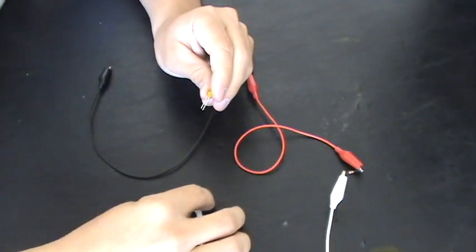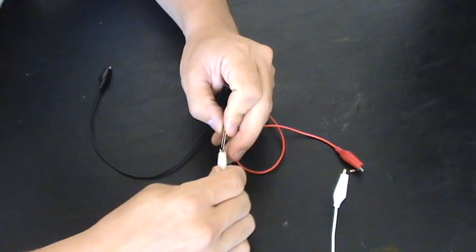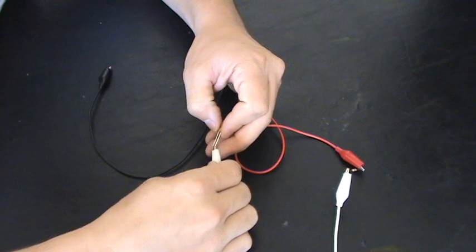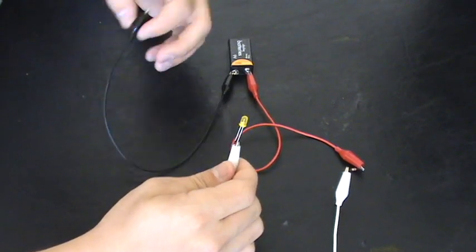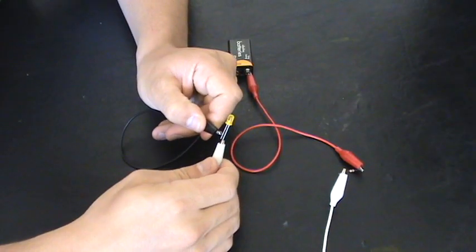So since our positive current is coming through the white one right now, let's go ahead and hook that up to our longer side. And now, once I hook up this black, we should have a full circuit. So let me hook this up.